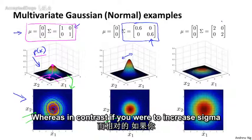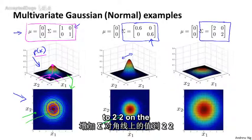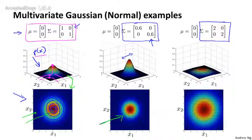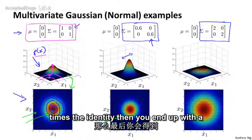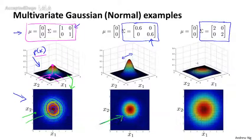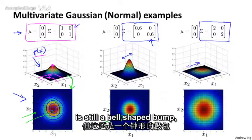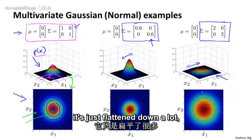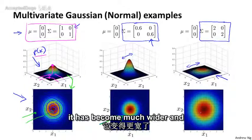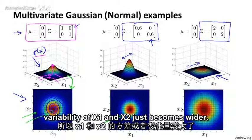Whereas in contrast, if you were to increase sigma to two, two on the diagonal, so there's now two times the identity, then you end up with a much wider, a much flatter Gaussian, and so the width of this is much wider. This is hard to see, but this is still a bell-shaped bump that's just flattened out a lot. It's become much wider. And so the variance here, or the variability of x1 and x2, just becomes wider.